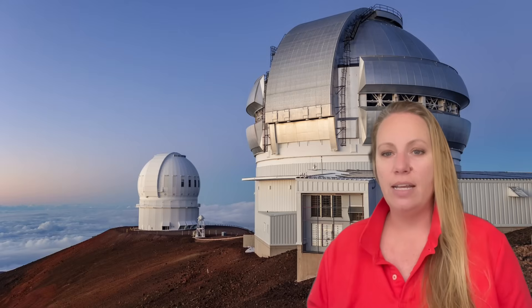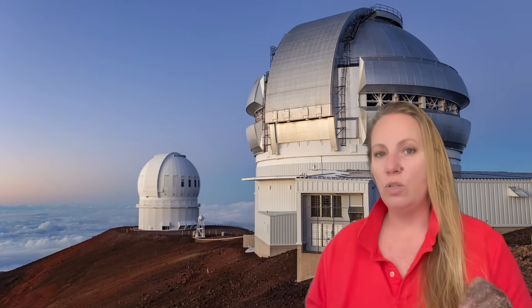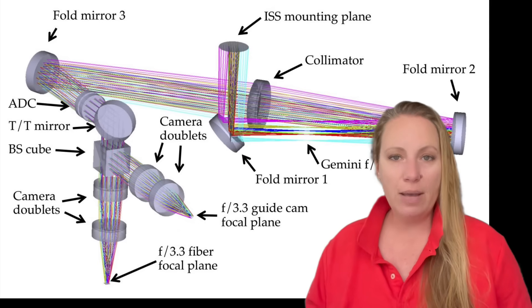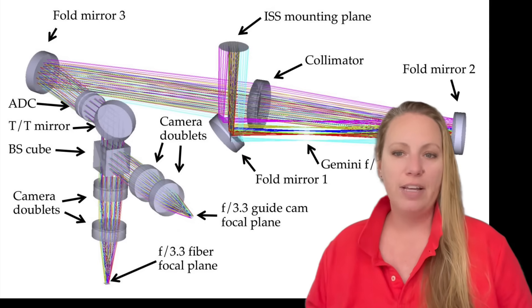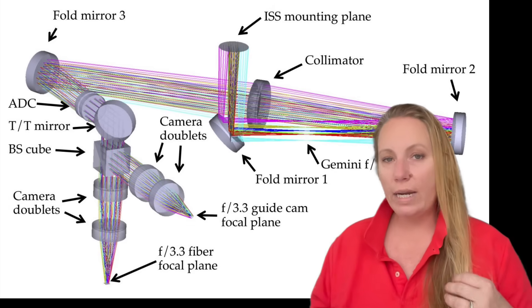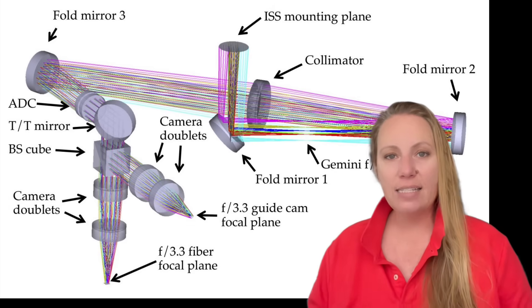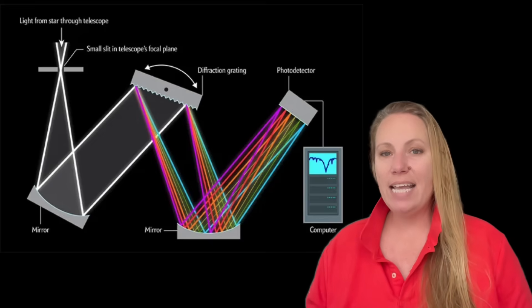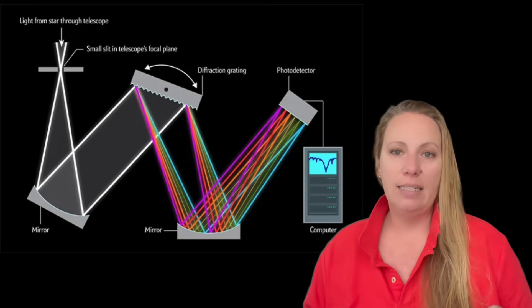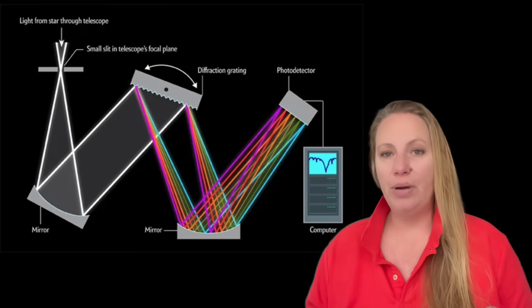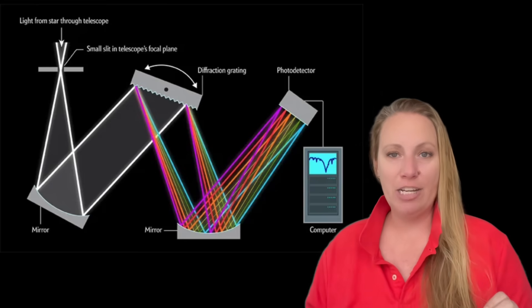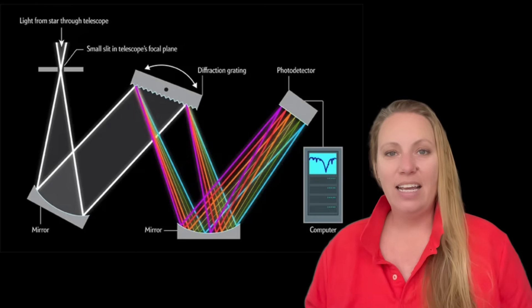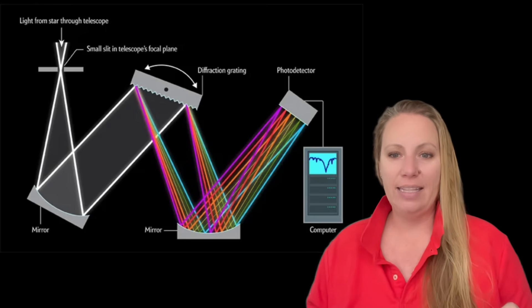The instrument used is called GMOS - Gemini Multi-Object Spectrograph. Basically what a spectrograph does is split light into colors so scientists can then see which chemicals are present. That is highly interesting when it comes to this interstellar visitor 3i Atlas.